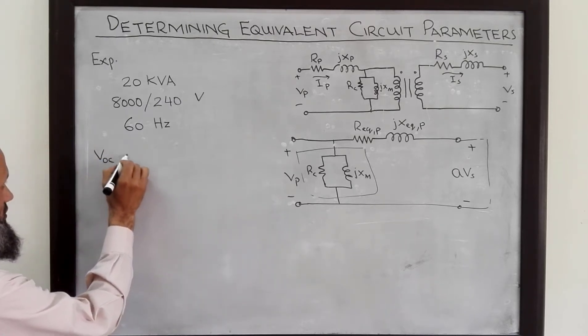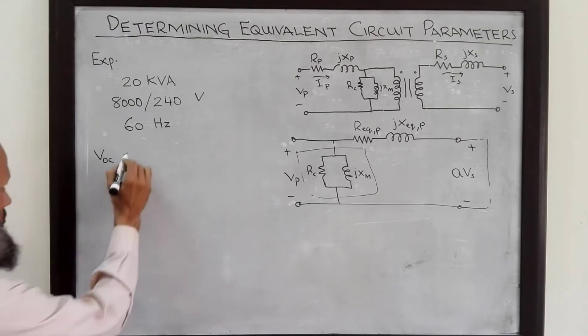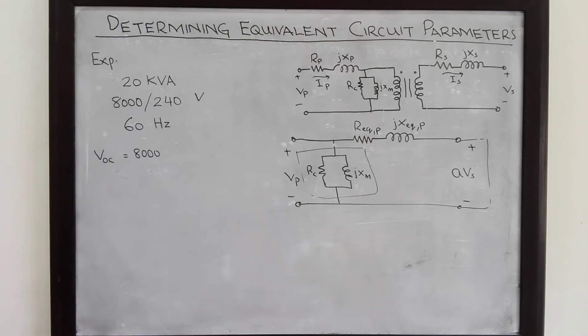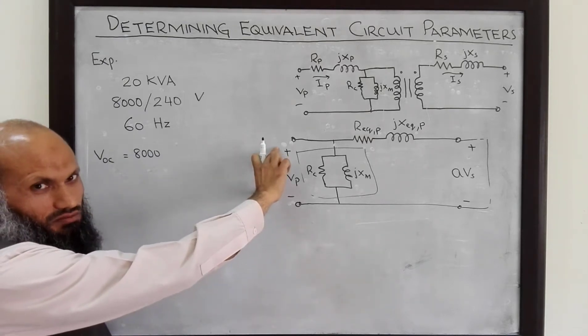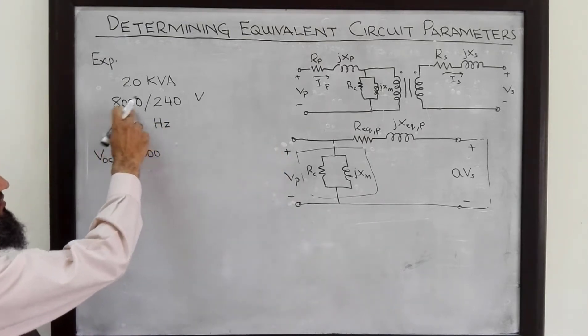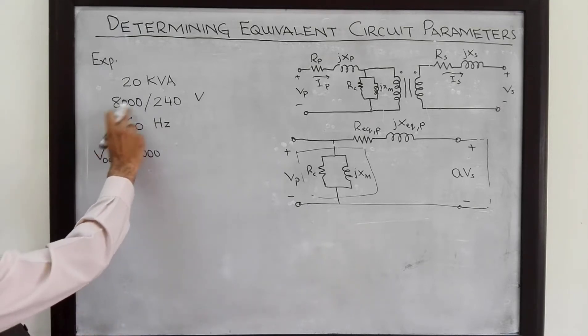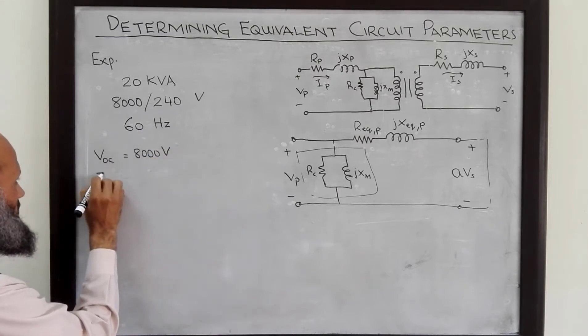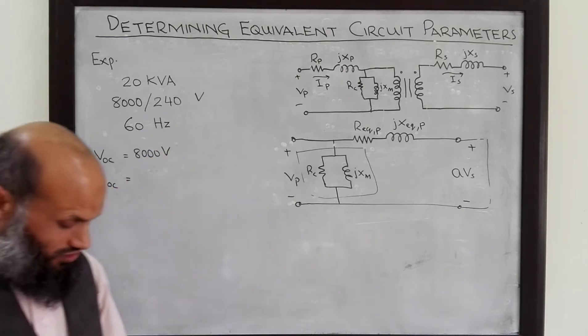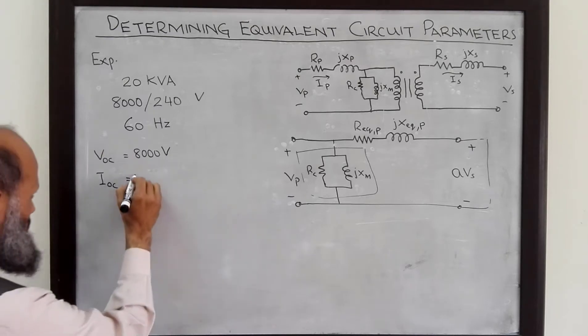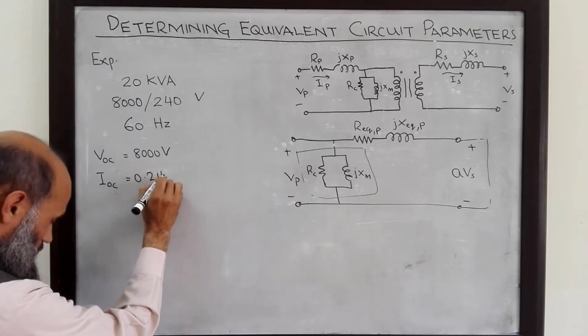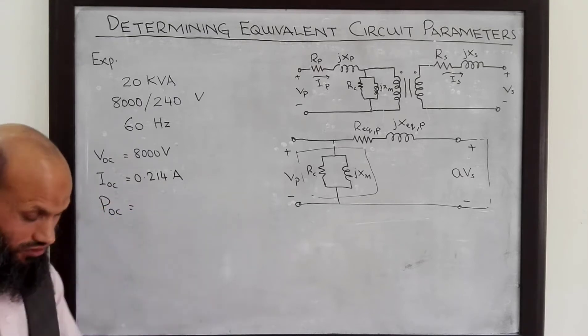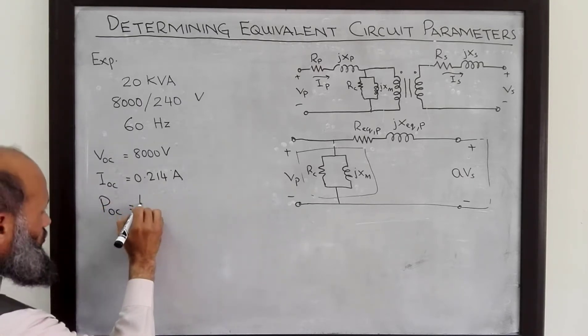The open circuit voltage that comes out to be equal to, we apply, remember when we perform open circuit test, we apply the rated voltage on the primary side. So, this transformer was rated for 8000 volts. So, we have applied this voltage and we measure the open circuit current. This is 0.214 amperes. We also measure the power open circuit. That is 400 watts.